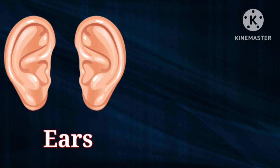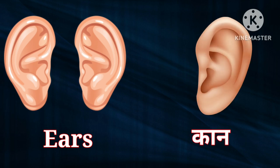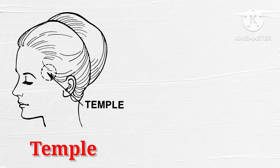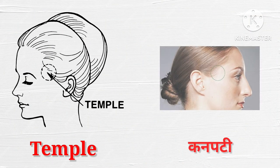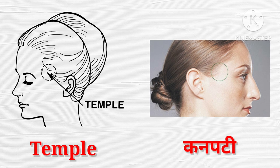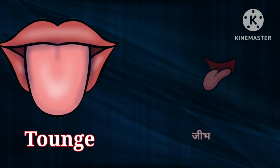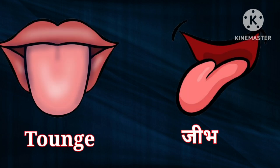Ears means kaan. It's called ears. Temple means kanpati. It's called temple. Tongue means jeeb. It's tongue.